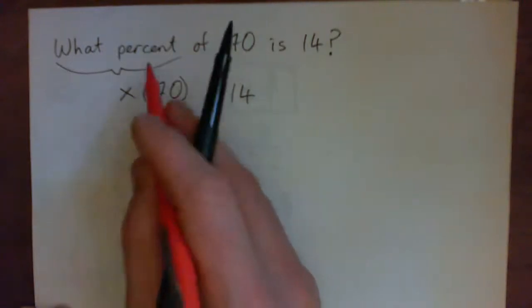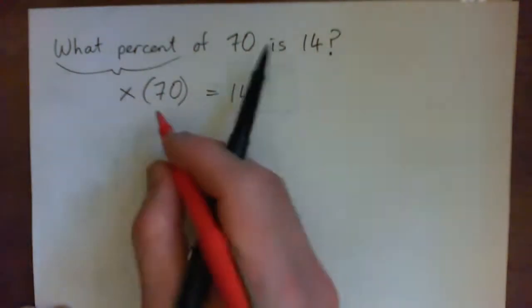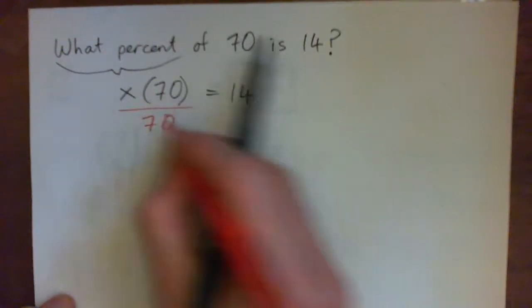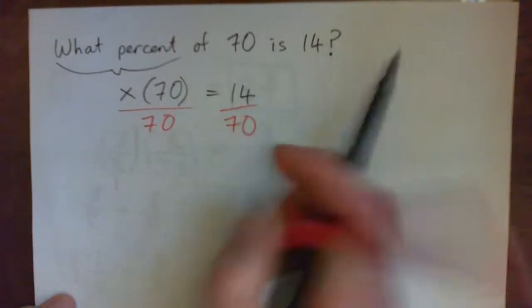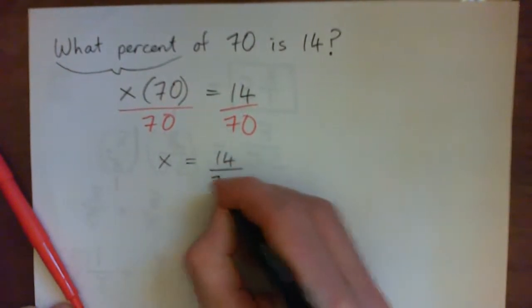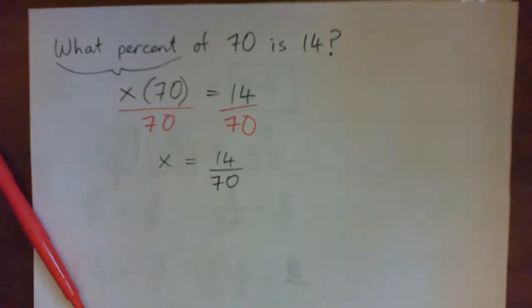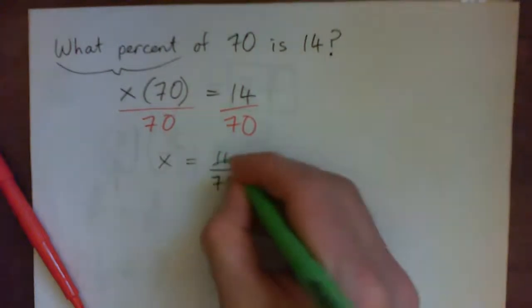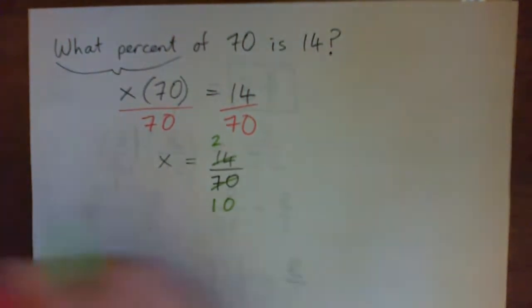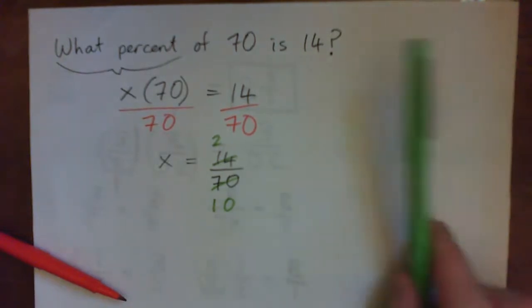So some unknown thing times 70 is 14. X times 70, to get x on its own, we need to divide by 70. So our unknown percentage is going to be 14 over 70. And now 7 into 14, 2 times, 7 into 70, 7 into 7 goes 1, 7 into 0, 0 times. So we have x equals 2 over 10, or one-fifth.